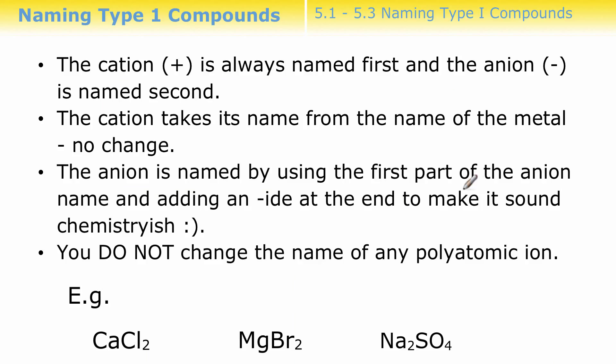Here are the naming conventions we'll use. We always name the metal or the cation first, and we name the non-metal or anion second. The cation takes its name from the name of the metal - no change. So if it says calcium, the name is calcium, you just say calcium.